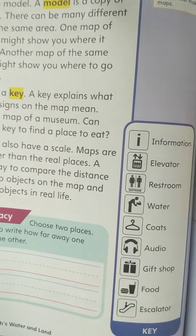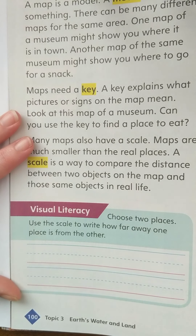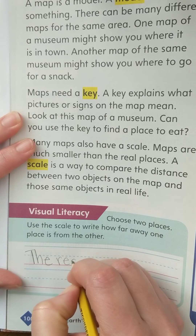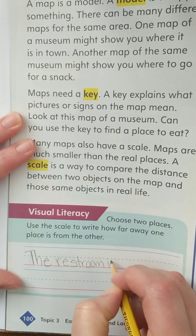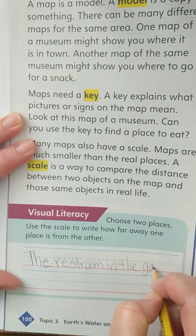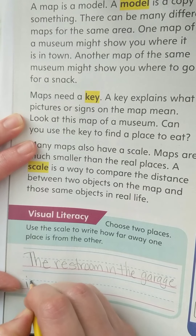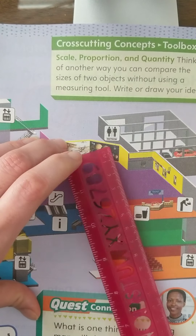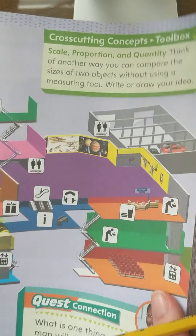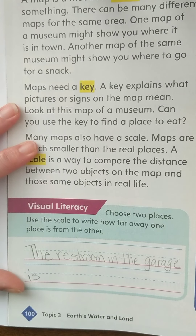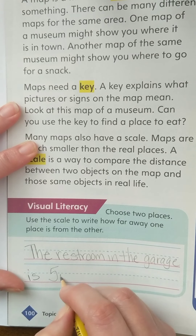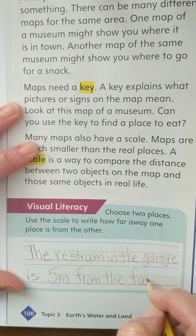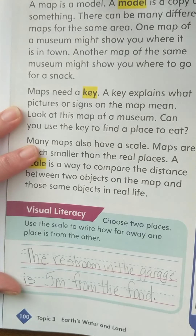So let's write how far apart those two are from each other. The restroom in the garage — let me double check and remeasure — yes, five centimeters, which equals five meters from the food. That was the closest restroom.